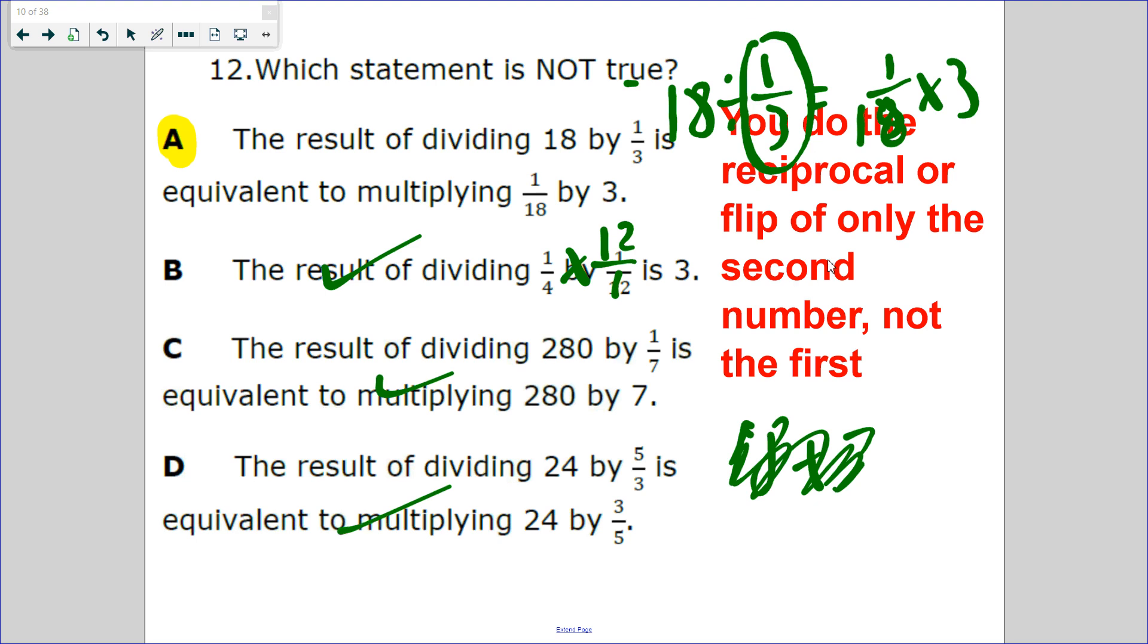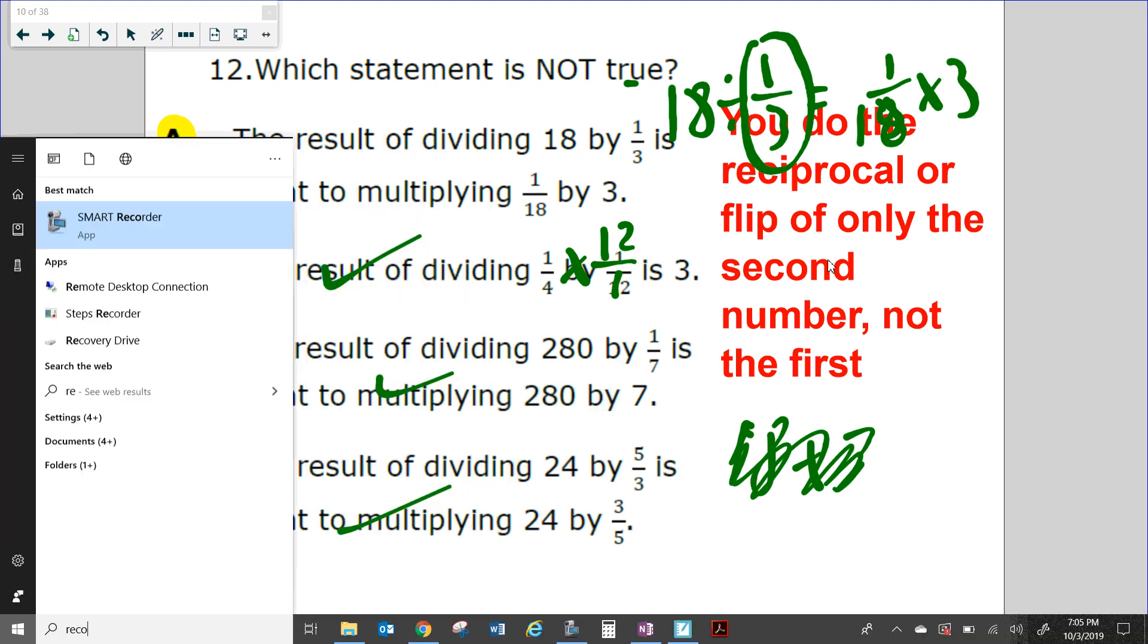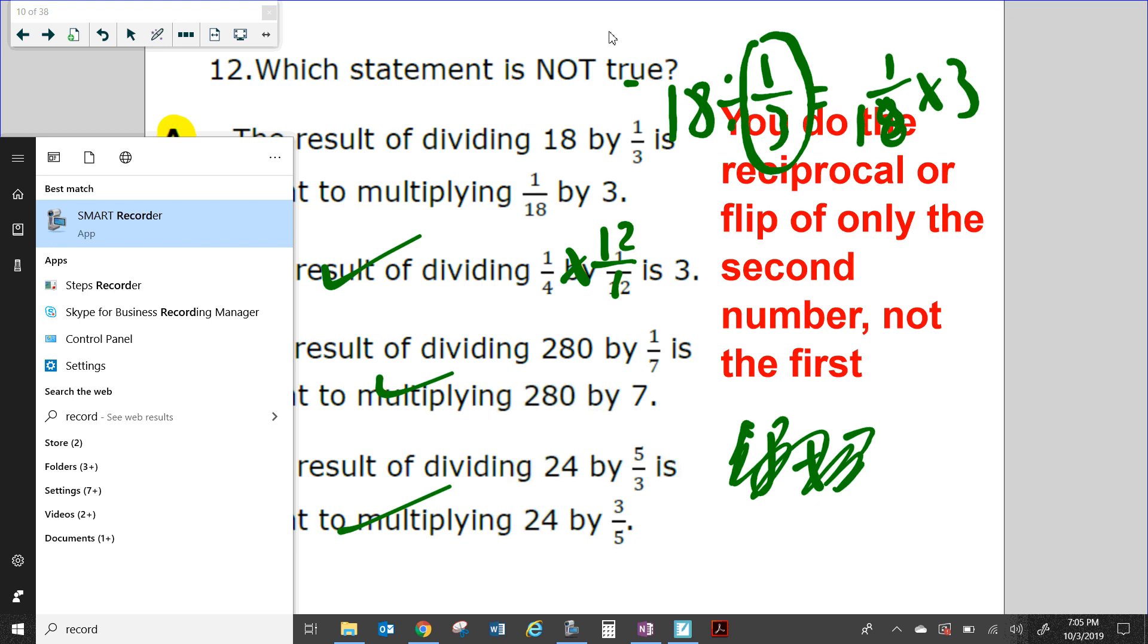A is wrong: you do the reciprocal, flip only the second number, not the first. And that is our review. Good luck on your test. Please study this and good luck on your review for test 2-1.